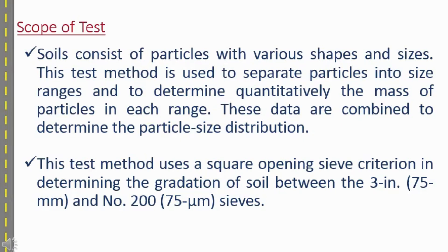Scope of the test: soil consists of particles with various shapes and sizes. This test method is used to separate particle sizes into size ranges and determine quantitatively the mass of particles in each range. It uses a square opening sieve criterion for determining gradation of soil between three inches (75 mm) and number 200 (75 micrometer) sieve.